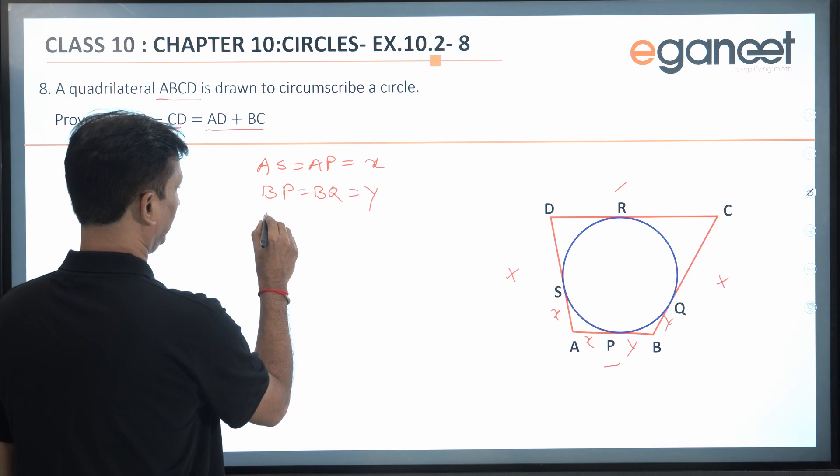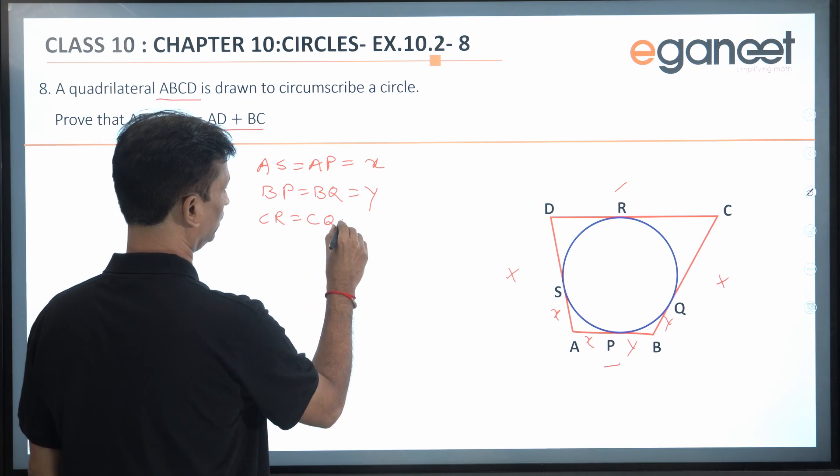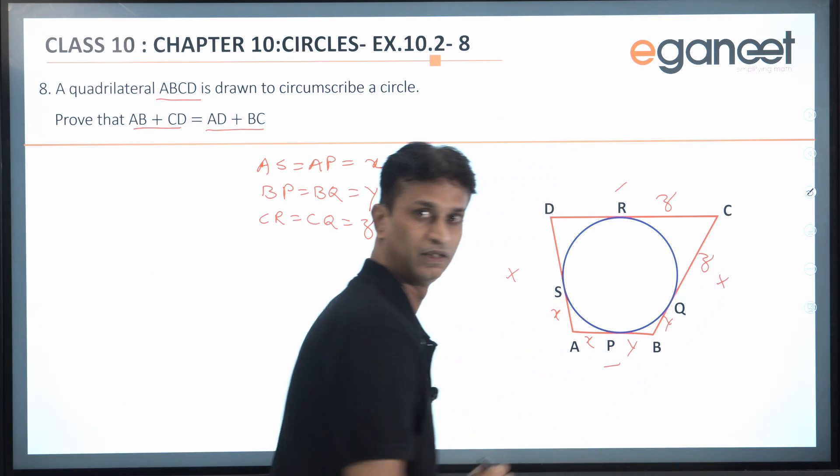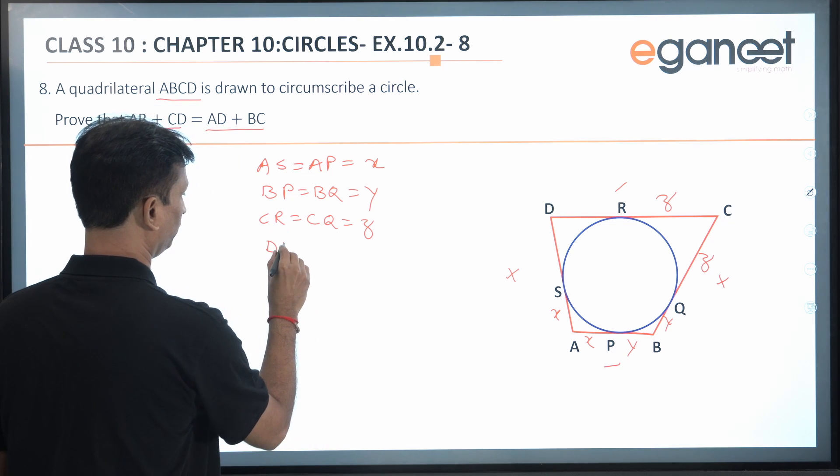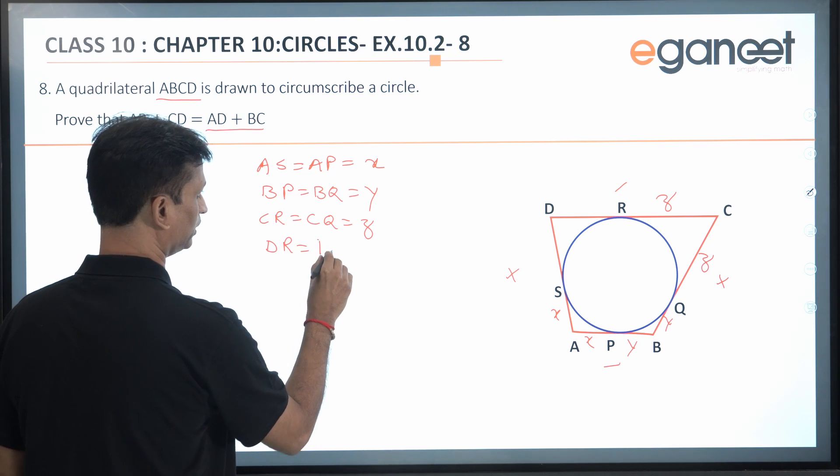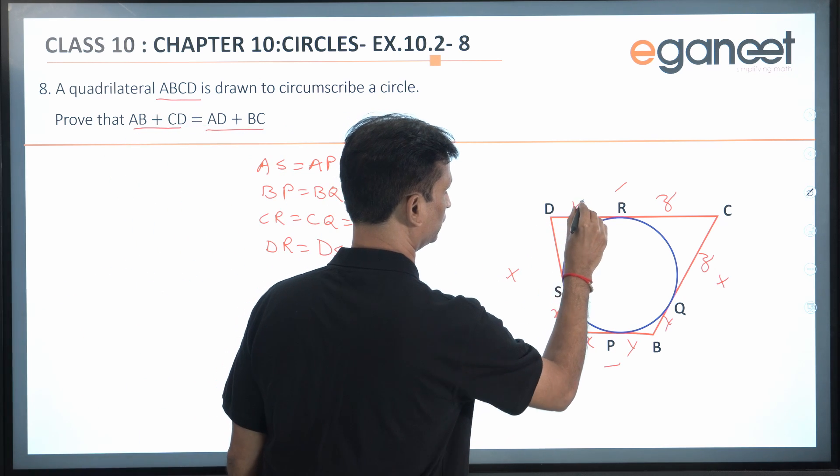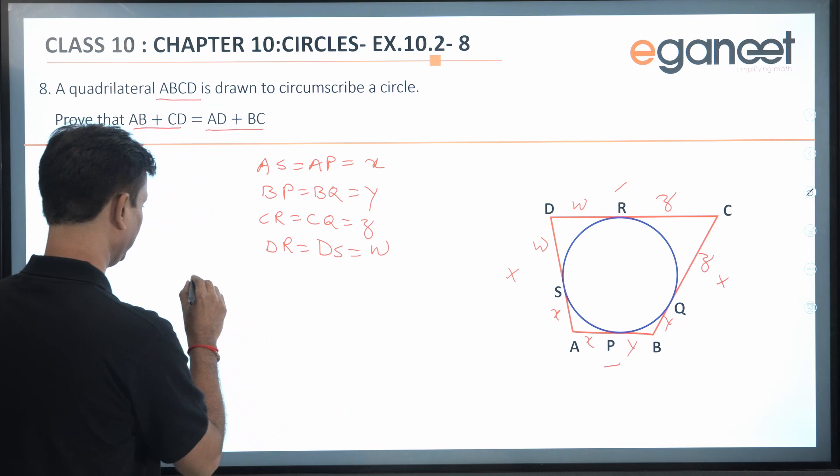In the same way, I can say CR = CQ = z. And DR = DS = w. This is w. Clear?